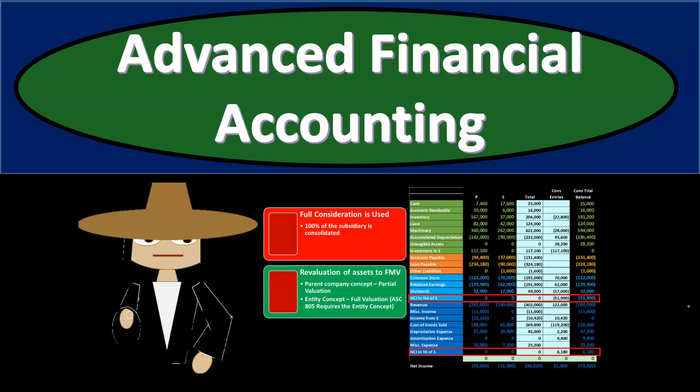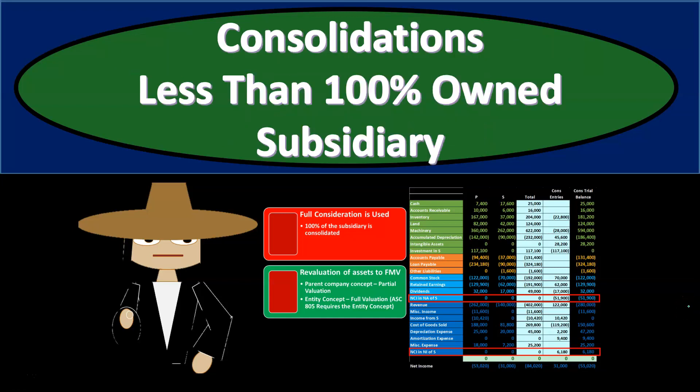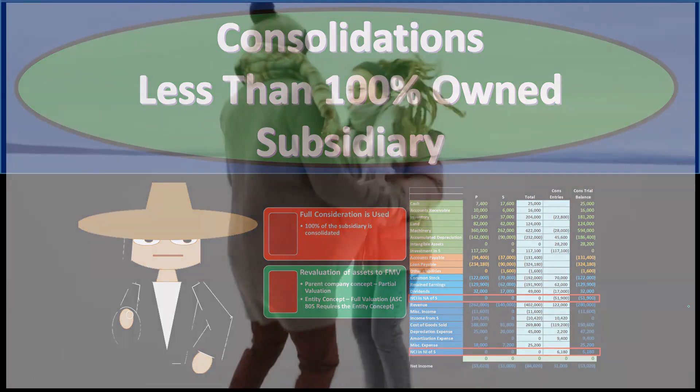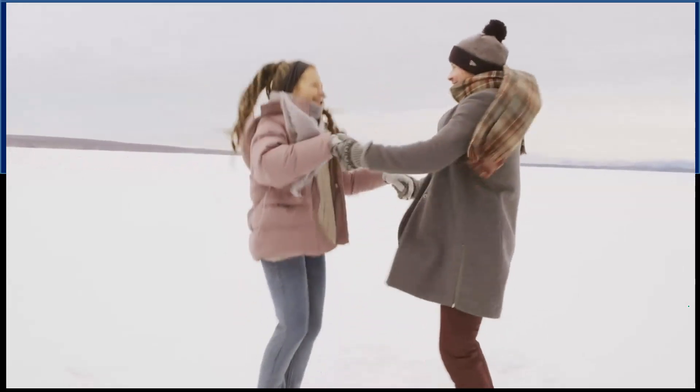Advanced Financial Accounting. In this presentation, we're going to discuss the consolidation process for a less than 100% owned subsidiary. We'll be able to understand some of the major differences in the consolidation process from a company that is 100% owned, where the parent owns 100% of the subsidiary, versus one in which the parent owns some other stock-sharing percent other than 100%.